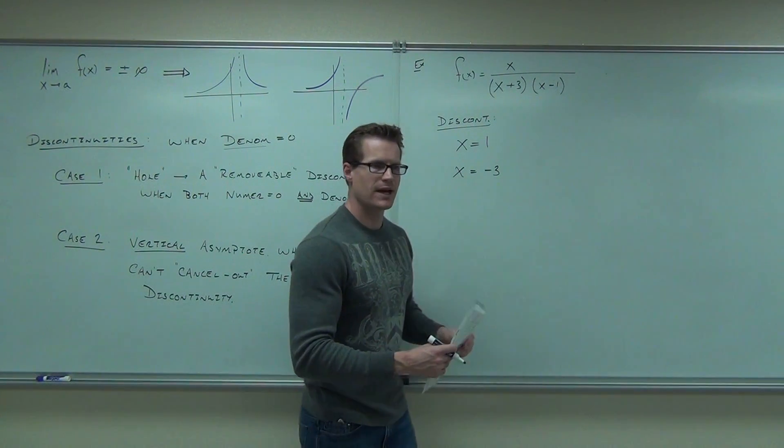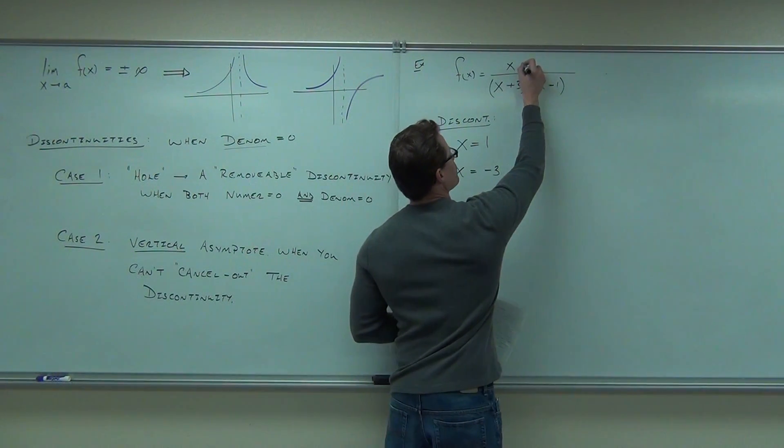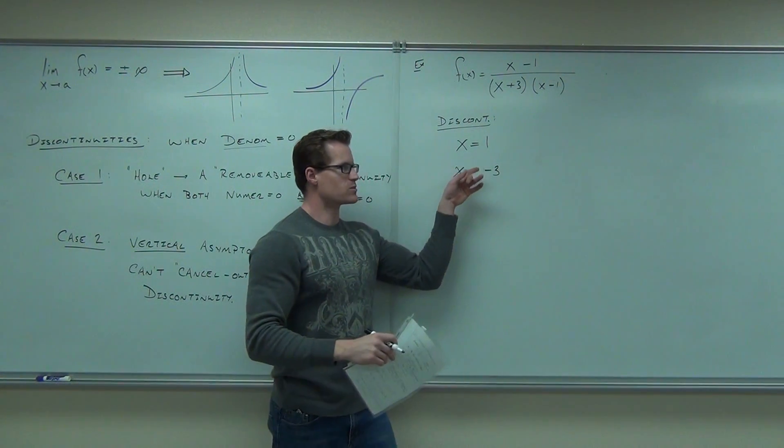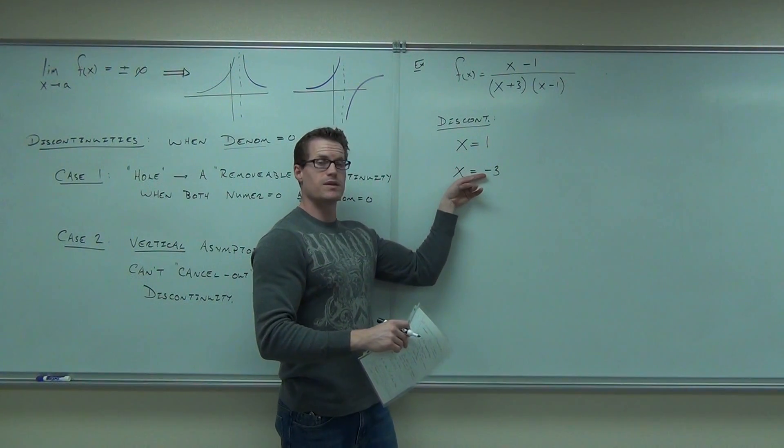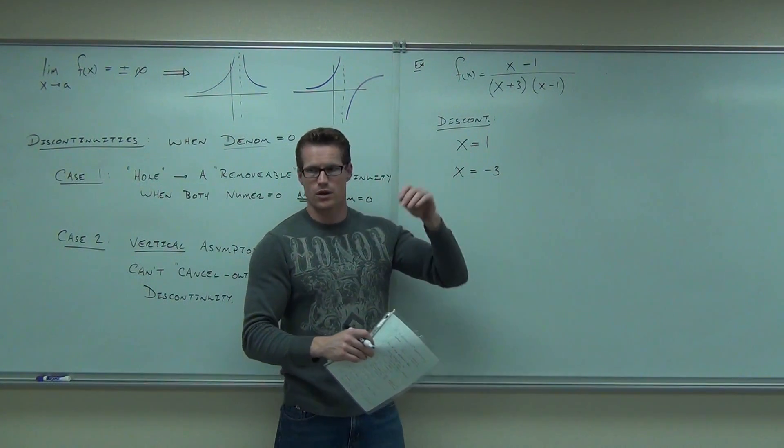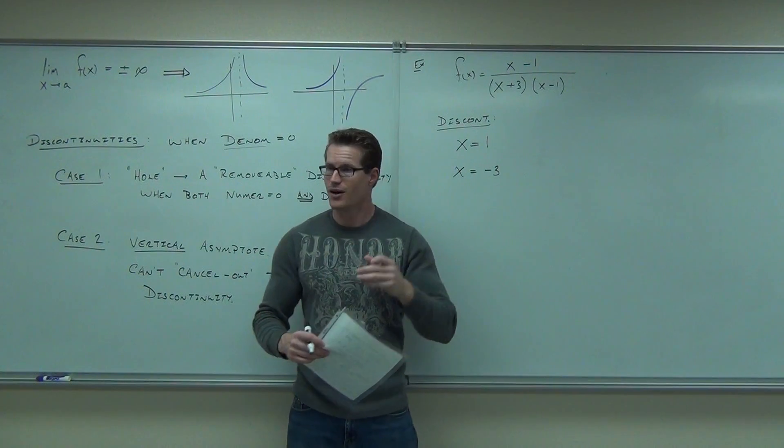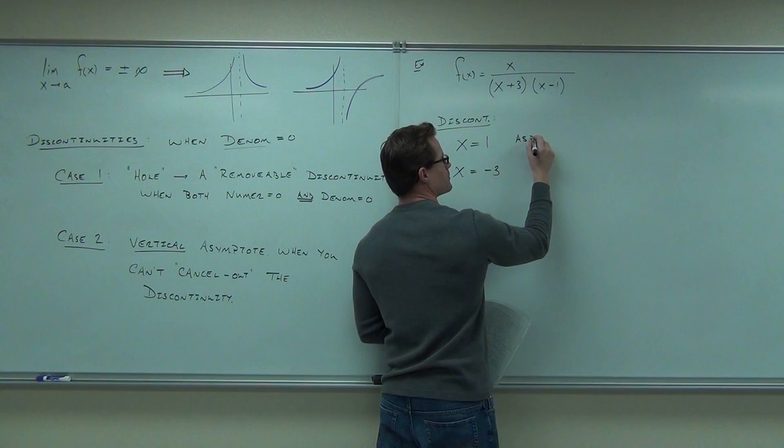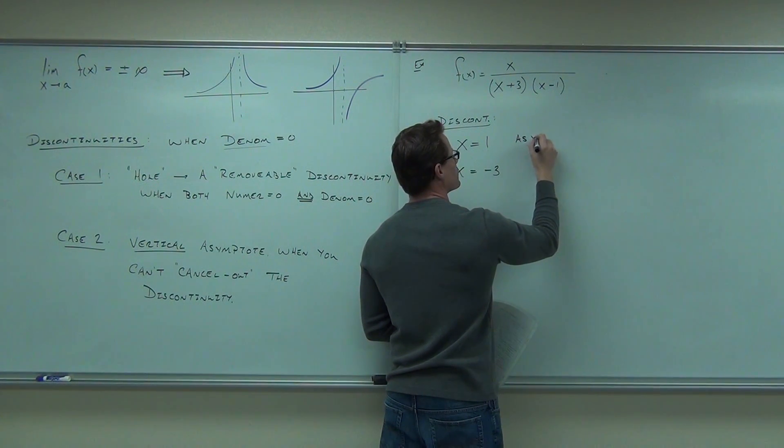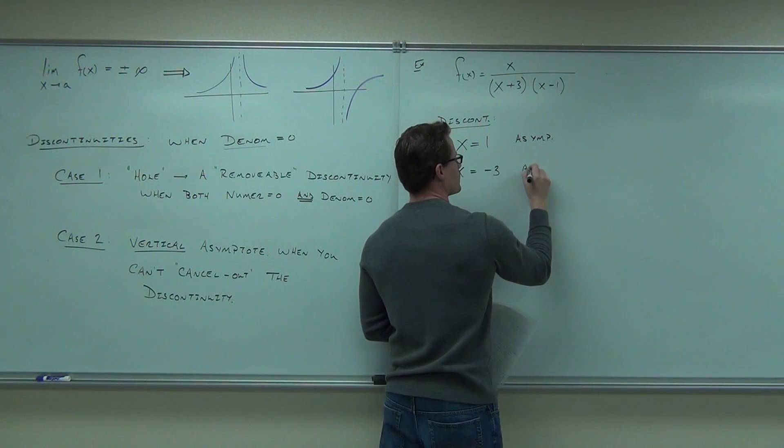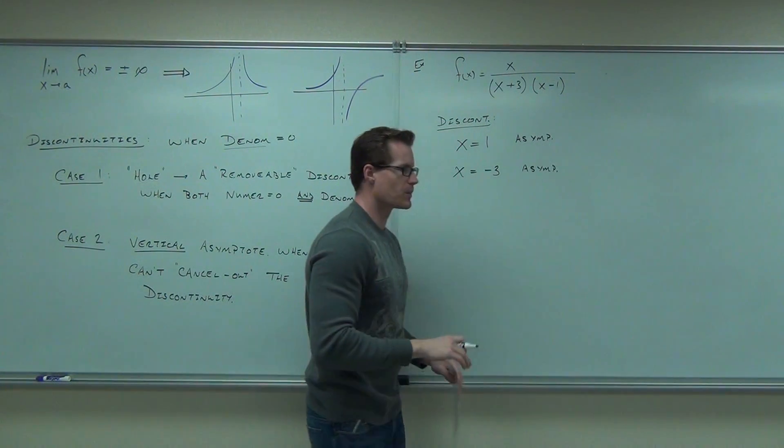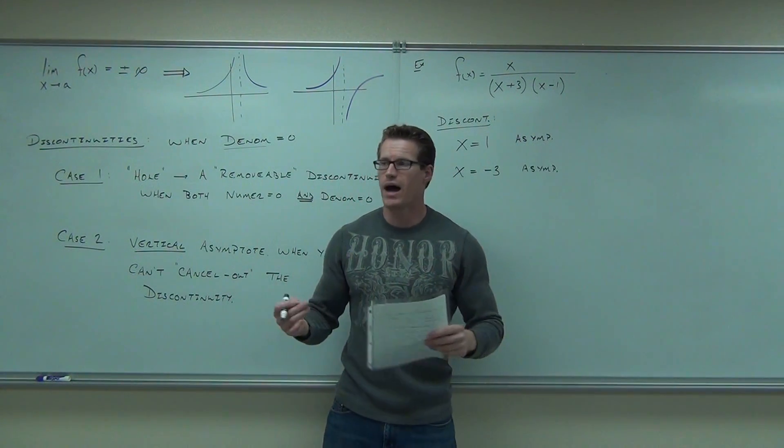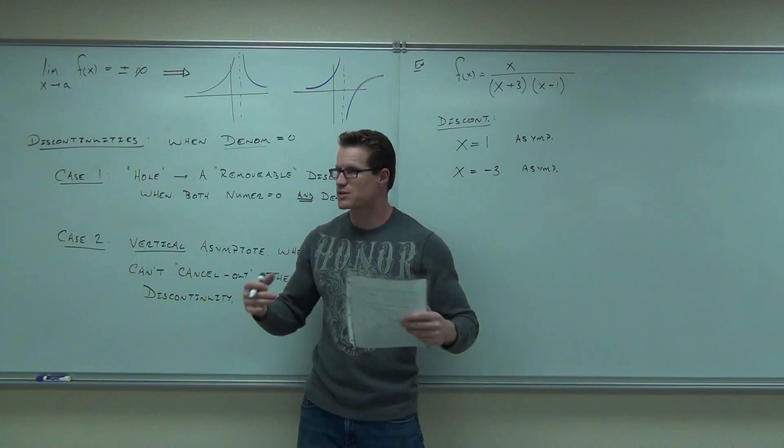Now, stop for a second. Just watch. What if I had done this, please? Which one would be the asymptote in this case? That would be the asymptote here. And that would be a removable discontinuity, or, in other words, a hole. Do you follow that? Okay, good. So, I'm going to change it back to this. This is an asymptote. And that's an asymptote. If I have just X over X plus three and X minus one, those are vertical asymptotes.